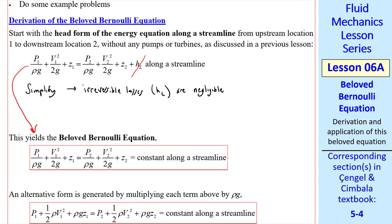This yields what I call the Beloved Bernoulli Equation. All the terms in this equation have dimensions of length or head, which is pressure expressed as an equivalent column height of a fluid.